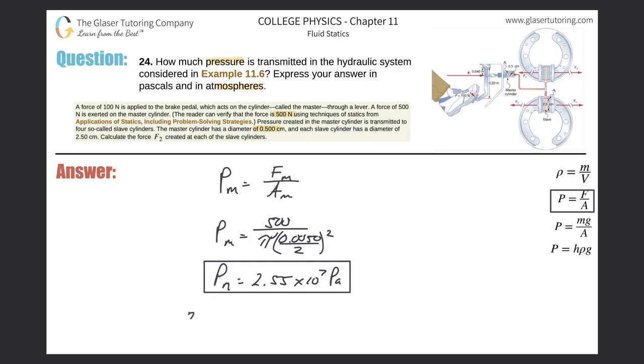Now we have to convert that value into atmospheres. The conversion is as follows: 2.55 times 10 to the seventh pascals, and there are 1.013 times 10 to the fifth pascals in every one atmosphere. That's the conversion factor, so simply take your answer and divide it by 1.013 times 10 to the fifth.